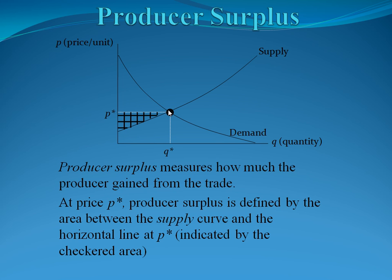The producer surplus again represents how much the producer has gained from going to equilibrium. Because for some people, they would have been willing to pay a little bit more, and the supplier could have set the price a little bit lower. And so they've gained some money from going to this equilibrium. At the price P star, producer surplus is defined by the area between the supply curve, which is our increasing curve, and our equilibrium price, indicated again by the checkered area.